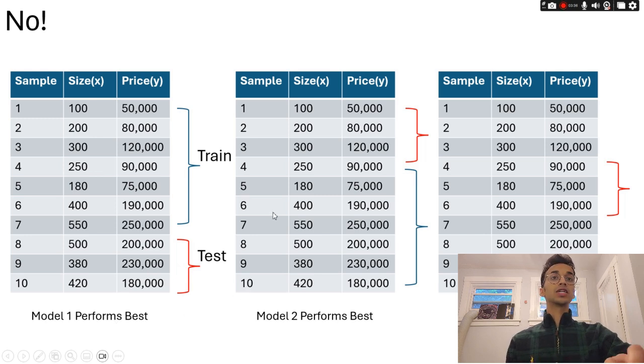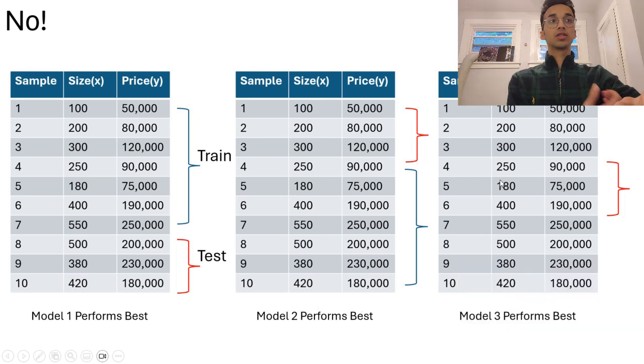If you select a different subset of a data set as the testing part let's say you reserve the first three rows as the test set and you train the model on the other rows it could happen that some other model let's say model two perform best similarly if you select some other part of your rows as testing it could happen that some other models perform best.